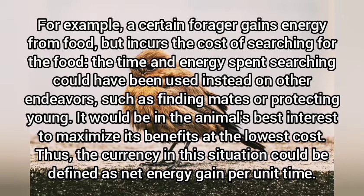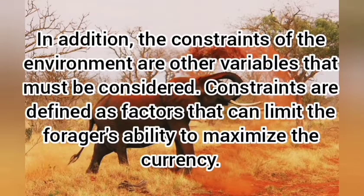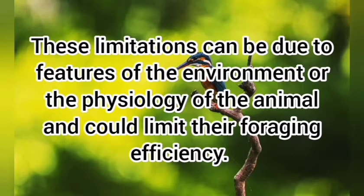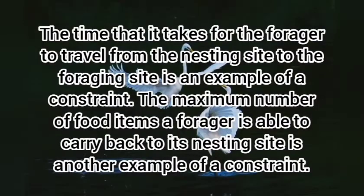It is in the animal's best interest to maximize its benefits at the lowest cost. Constraints of the environment are another variable that must be considered. Constraints are defined as factors that can limit the forager's ability to maximize the currency. These limitations can be due to features of the environment or the physiology of the animal, and could limit their foraging efficiency. The travel time from the nesting site to the foraging site, the maximum number of food items a forager can carry back, and cognitive constraints such as limits to learning and memory are all examples of constraints.